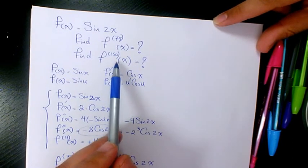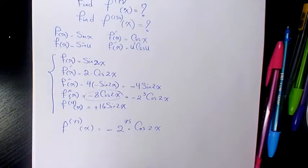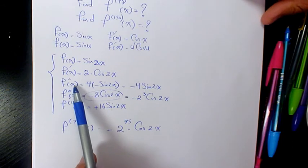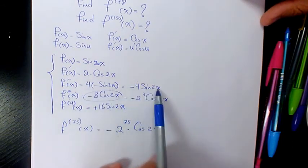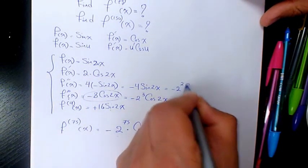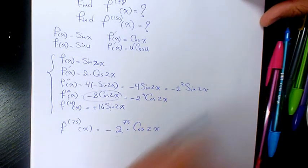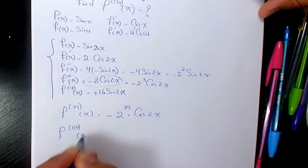Now let's find out the 150th derivative. 150 is a multiple of 2, but it is not a multiple of 4. So the answer is going to be in this format, which is going to be negative 2 squared sine 2x.